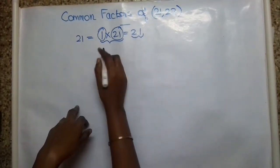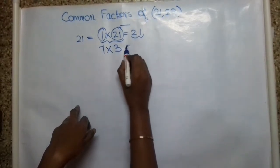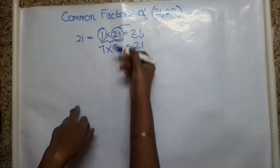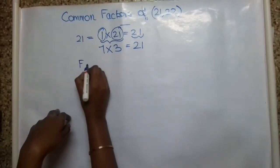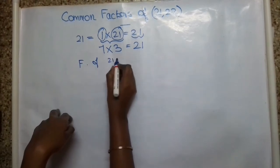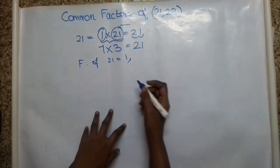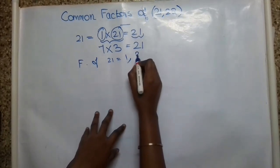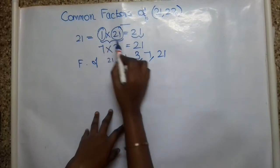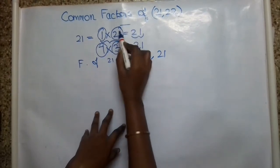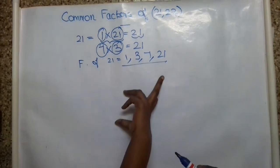But also in 21, 7 into 3 is also 21. So wherever combinations come, we check all combinations. So the factors of 21 are 1, 3, 7 and 21.